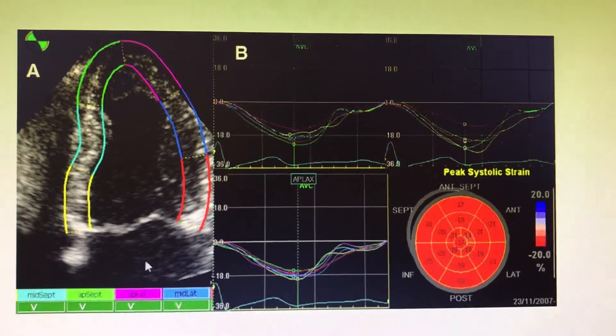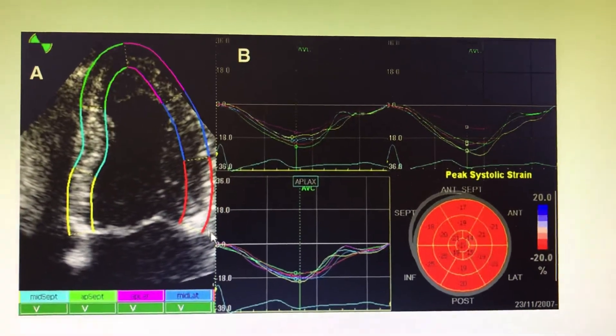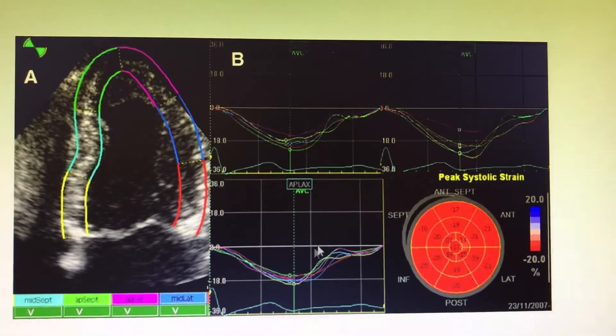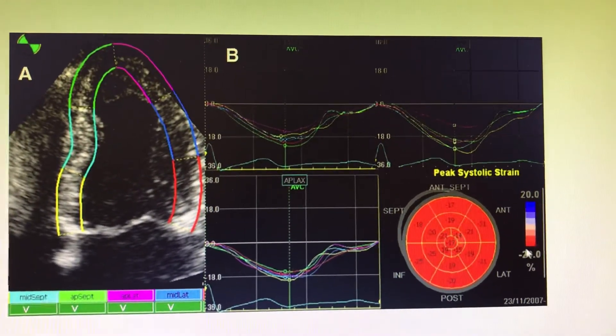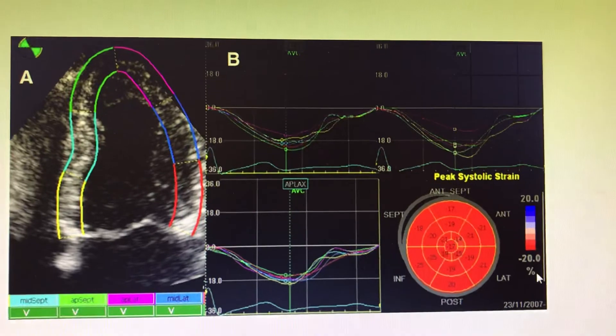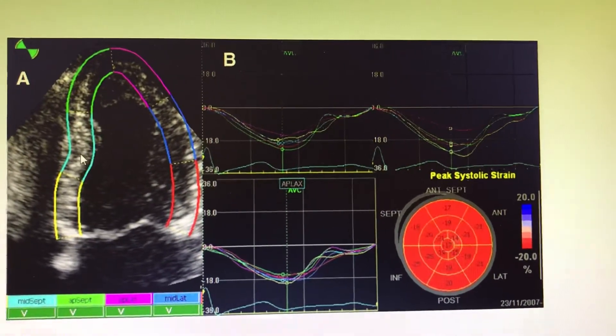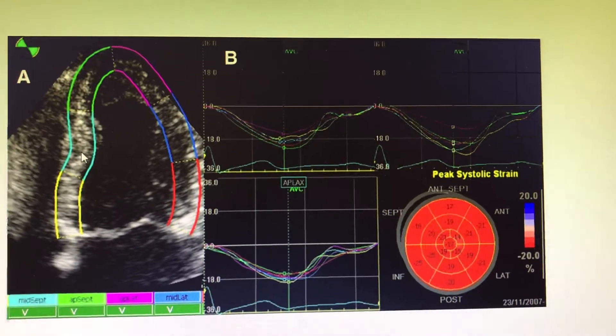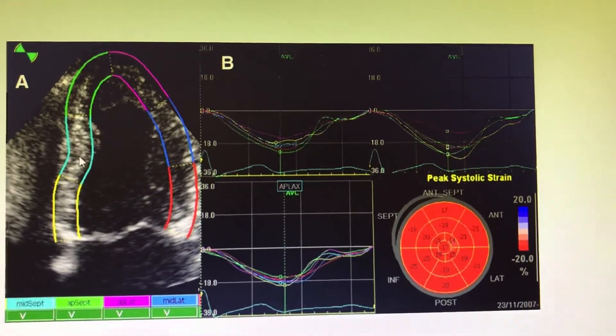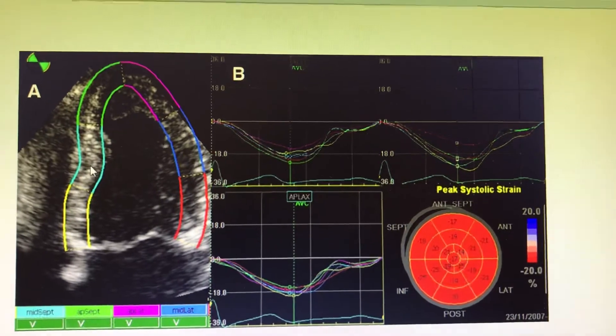For longitudinal contraction in speckle tracking, the absolute normal contraction is minus 18 to minus 20 percent. The minus indicates that when the speckle is contracting, it becomes negative. In radial contraction it's plus 15, and in circumferential it varies from plus 20 to minus 20.